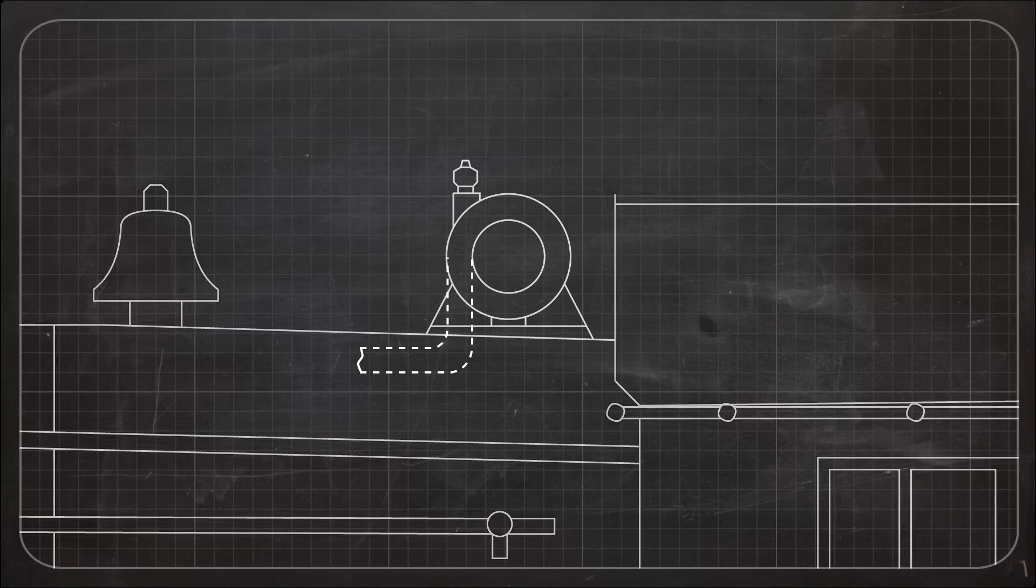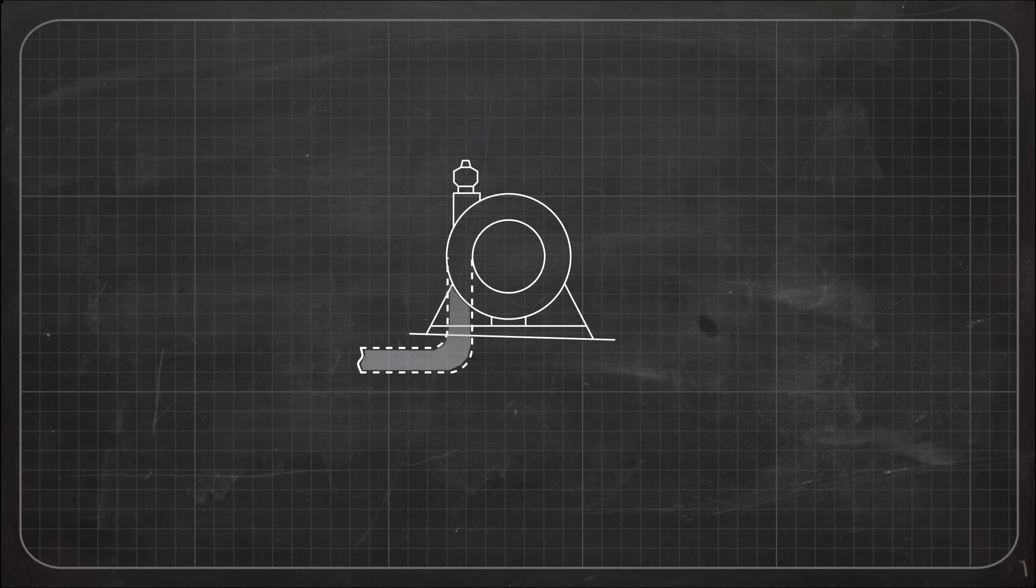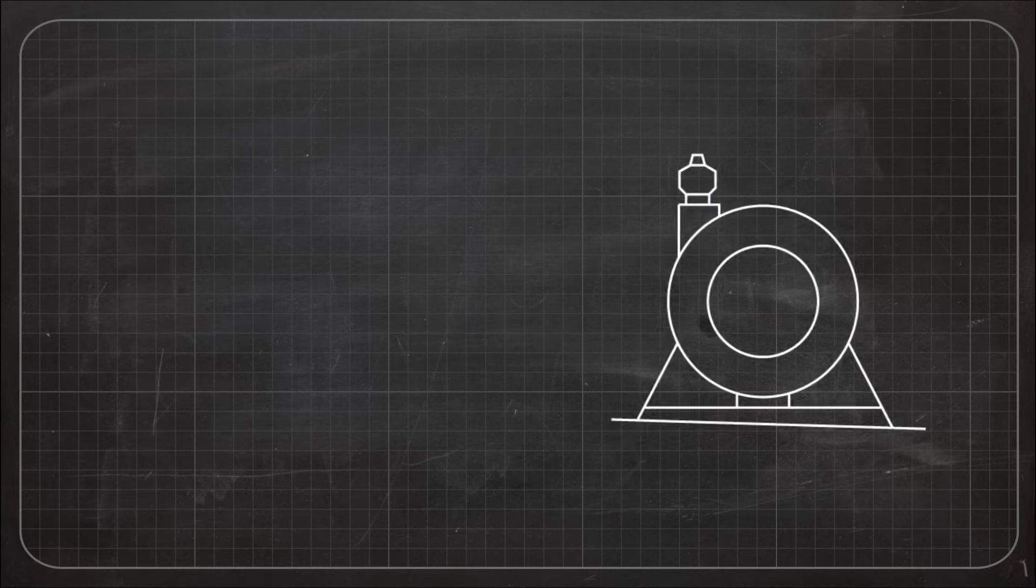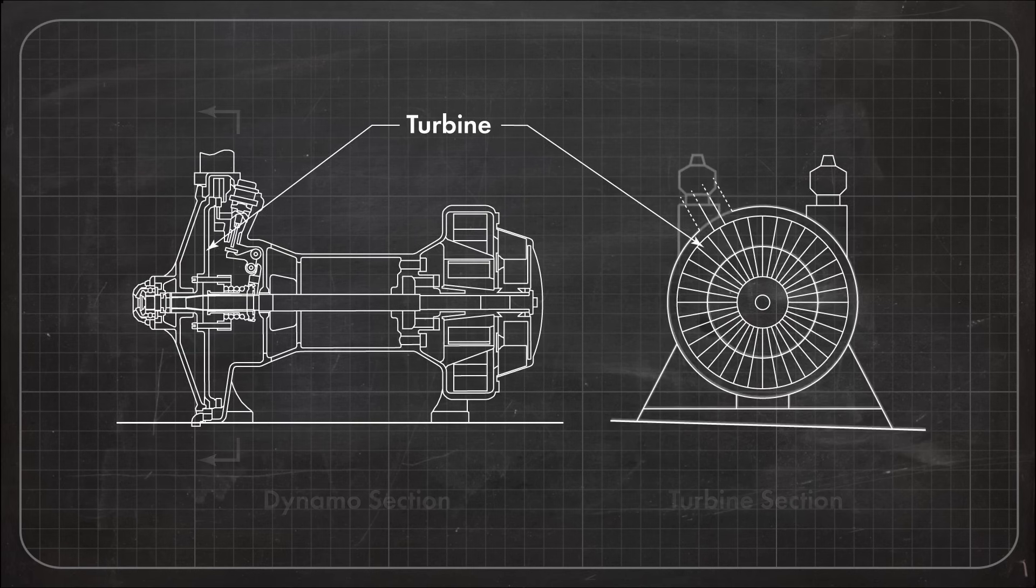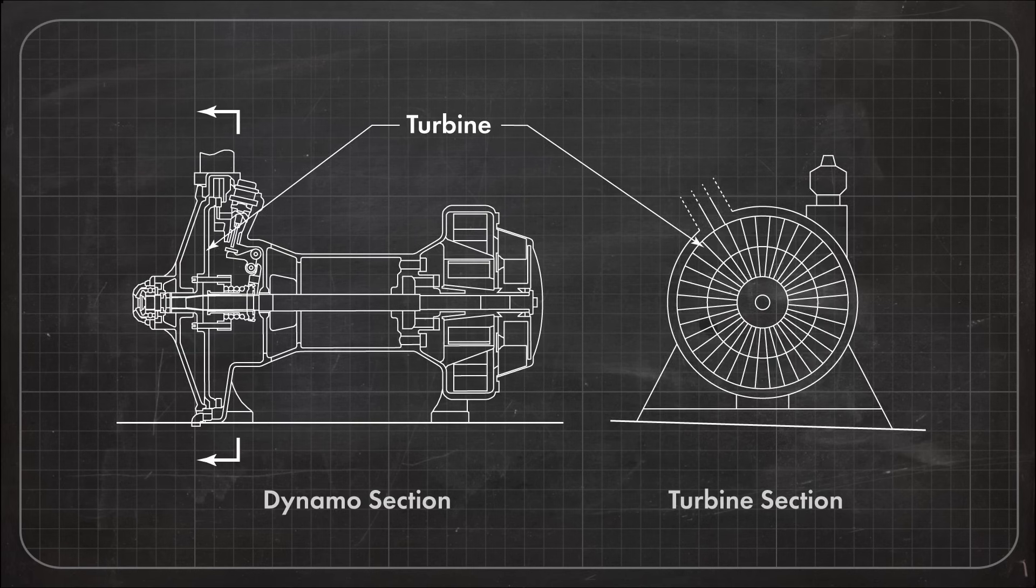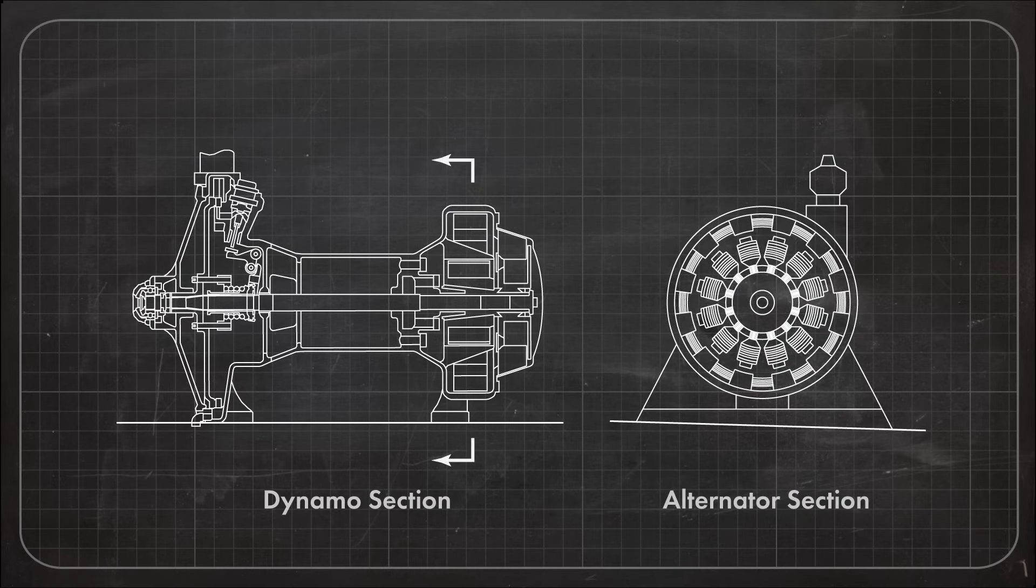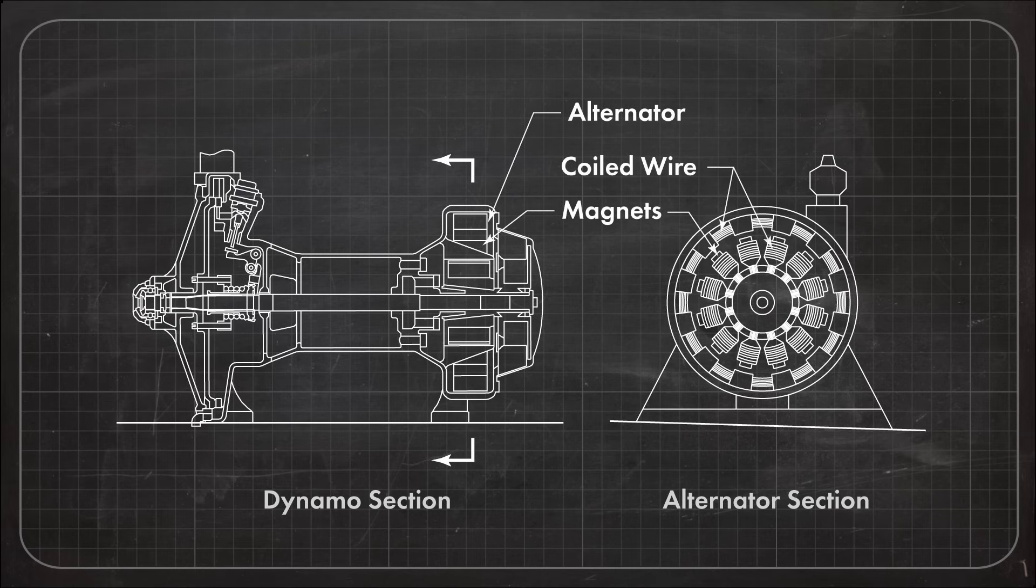The boiler diverts some of its high pressure steam to the dynamo, where it hits small turbine blades. These blades spin a drive shaft connected to magnets with an alternator. Inside the alternator is a collection of coiled wire. As the magnets spin, they create an electromagnetic field generating an alternating current within the wires.